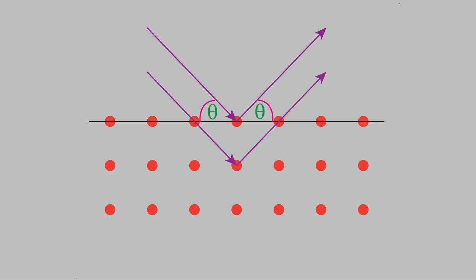Suppose the second layer of atoms is a distance d below the surface. Let's draw a line that stretches from the top vertex and is normal to the second X-ray. As you can see, the second X-ray must travel a little further than the first X-ray before it hits an atom. The extra distance is given by this line segment. And how long is that? Well, geometry tells us that this angle is equal to theta.